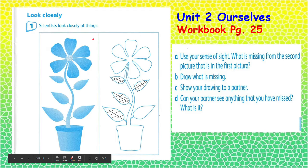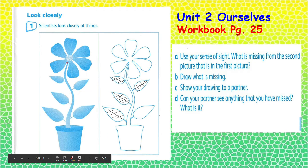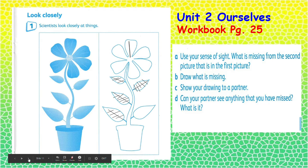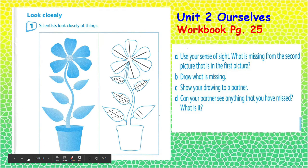Look closely. Now using your sense of sight, what is missing from the second picture that is in the first picture? Look at this part — can you see what is missing there? Then you will draw. So let's draw the petals and the lines on them. And same with the leaves — even the leaves have details and lines. So you will draw the missing parts. When you are done, show your drawing to your partner, and then discuss if your partner can see anything that you have missed.